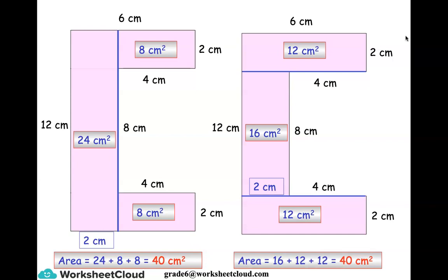Perhaps you split the compound shape a different way — no problem at all. You might have split it into the top rectangle, the bottom rectangle, and the vertical rectangle in the middle. You'd just need to work out that that side is 2 centimeters based on the information given. The middle rectangle would be 16 centimeters squared, the top is 6 times 2 = 12 centimeters squared, and the bottom is also 6 times 2 = 12 centimeters squared. Adding them together gives the same answer — 40 centimeters squared. As long as you've worked out the individual components and lengths correctly, everything should be good.